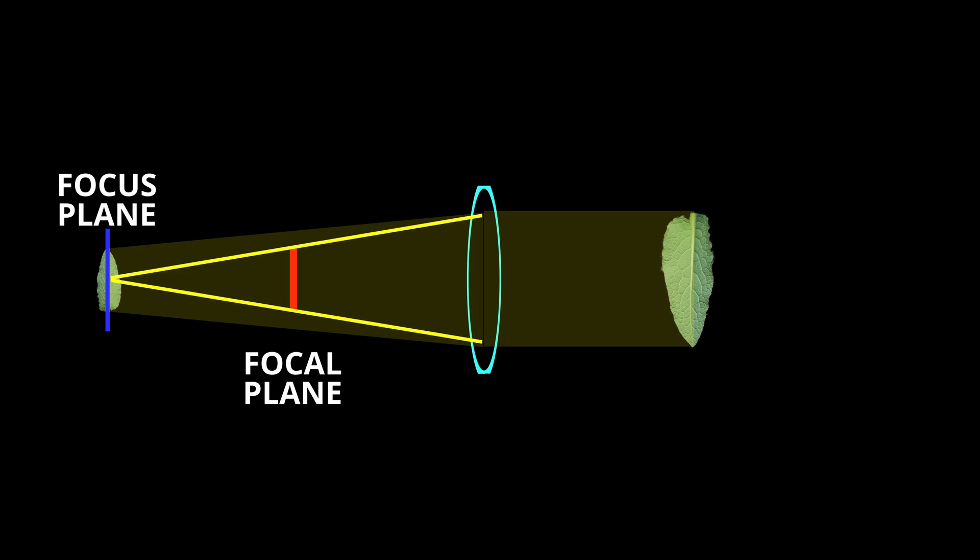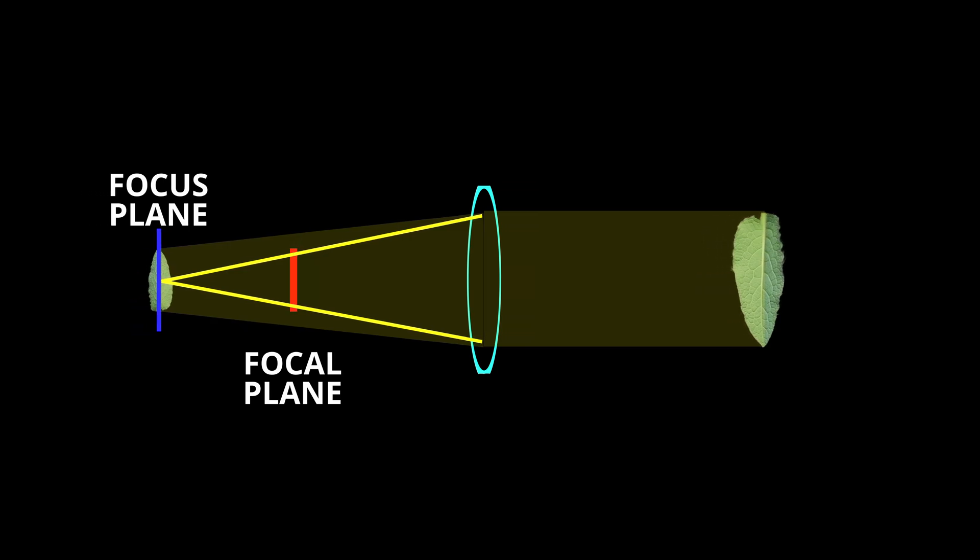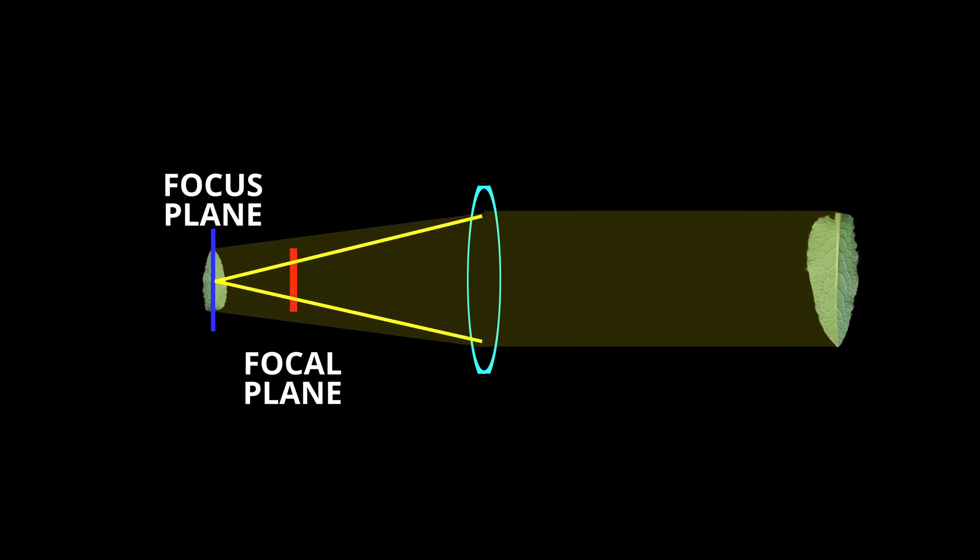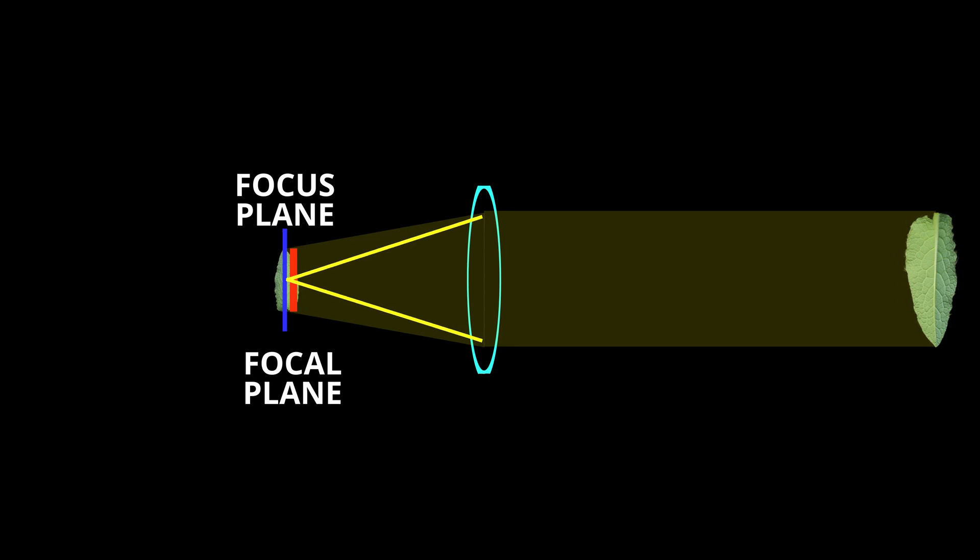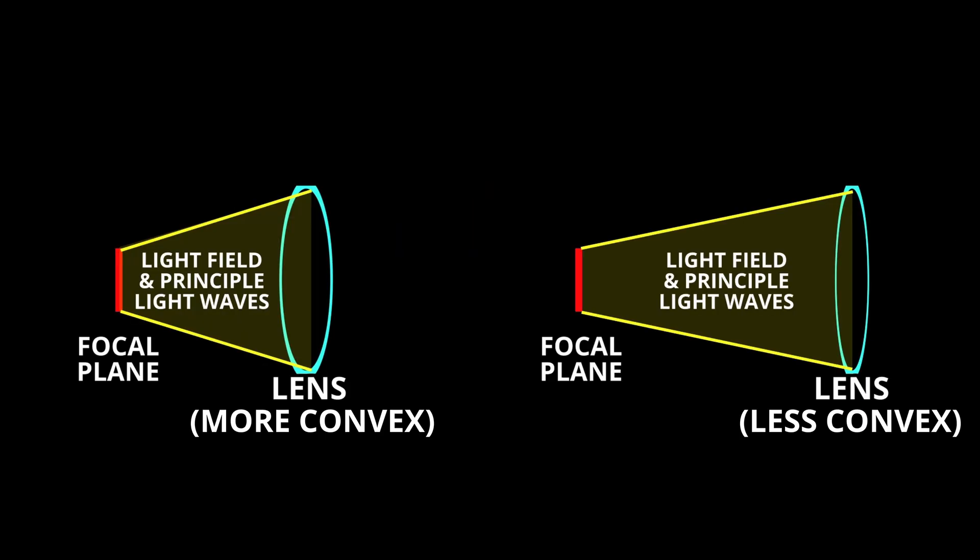The focus plane represents that physical place within the image circle where an in-focus image can actually be formed. The focus plane may move back and forth depending on such factors as how distant the object is or temperature changes affecting the optics. Focus diagrams also portray another characteristic called focal plane, which defines where light rays would come into a focus point were they entering the lens in parallel.